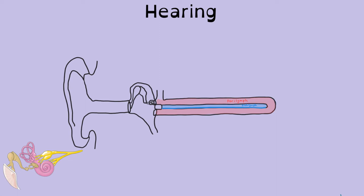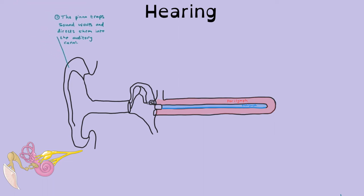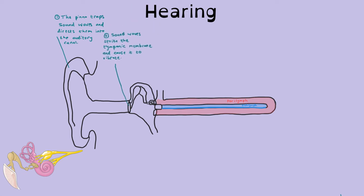So let's look at how hearing takes place. When you hear a sound, it comes out of someone's vocal cords and produces sound waves that travel through the air. The pinna, or your cartilaginous structure on the outside of your ear, traps the sound waves and directs them into the auditory canal. The auditory canal directs the sound waves down towards the tympanic membrane and causes it to vibrate.